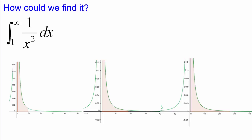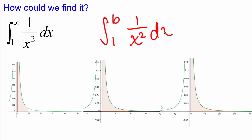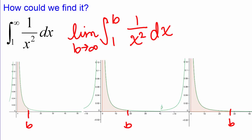How do we define what we mean by an integral from 1 to infinity? We don't have a specific way of finding that yet, but we can find an integral from 1 to any number b. For any number b, whether it's 10, 18, or 25, we can find the area from 1 to b. So to go from 1 to infinity, we keep making b bigger and bigger, and we define the integral from 1 to infinity to be the limit as b goes to infinity of the integral from 1 to b.